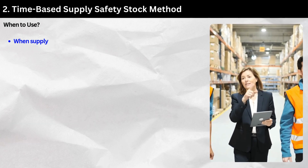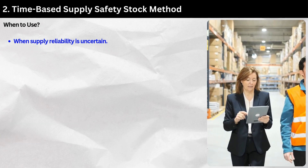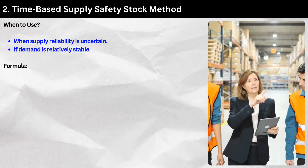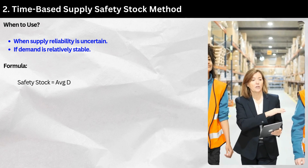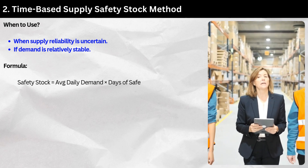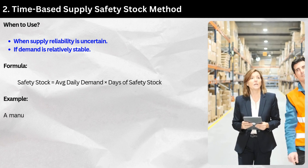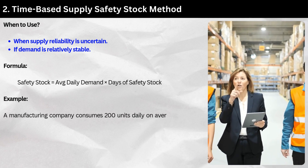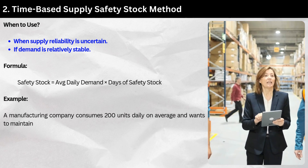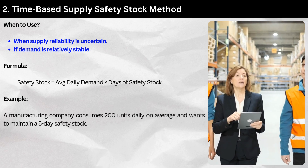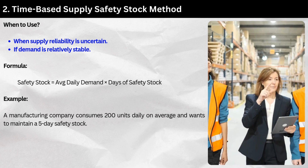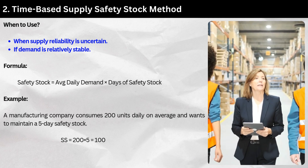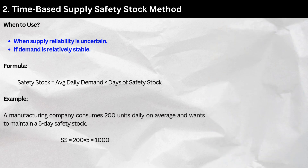Method 2: Time-based supply safety stock method. When to use: when supply reliability is uncertain and demand is relatively stable. Formula: Safety stock equals average daily demand times days of safety stock. Example: A manufacturing company consumes 200 units daily on average and wants to maintain a 5-day safety stock. SS = 200 × 5 = 1,000 units.